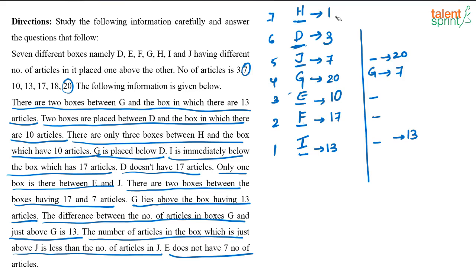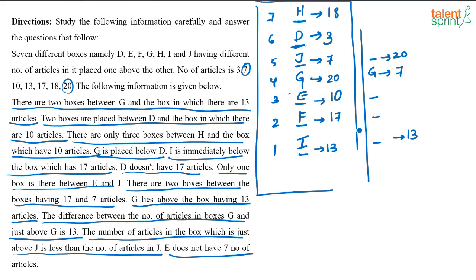This gives us the final arrangement. Now let us also verify Case 2, where G is 7 and the box above G is 20, to confirm it leads to a contradiction.